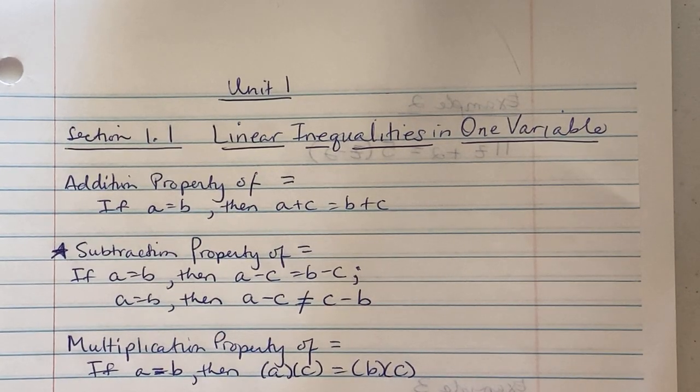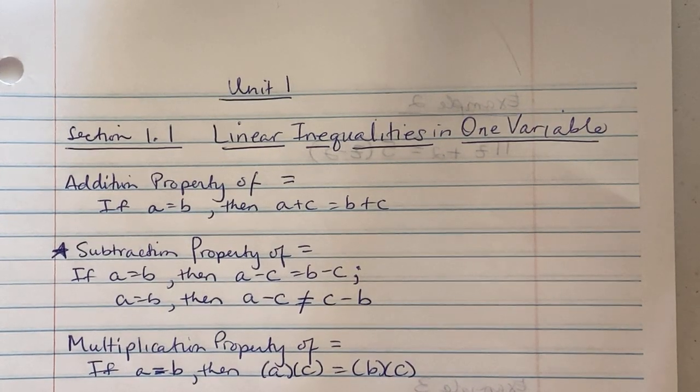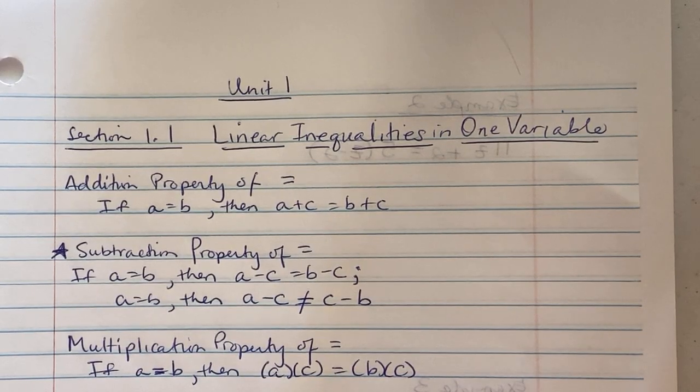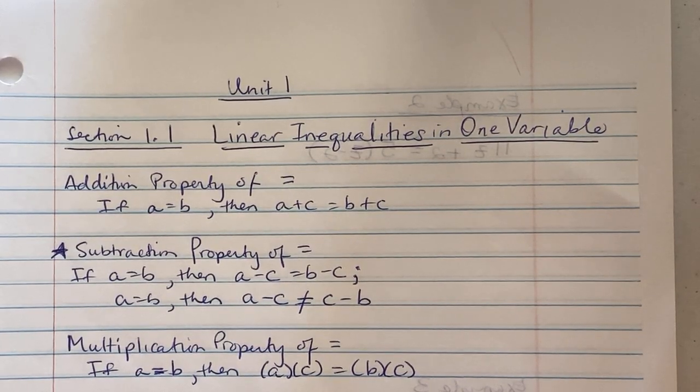Okay, this is Section 1.1, linear inequalities in one variable. Some property rules you need to remember back from your algebra one days: the addition property of equality says that if a is equivalent to b, then a plus c, where c represents anything, could be equal to b plus c. They balance themselves out.